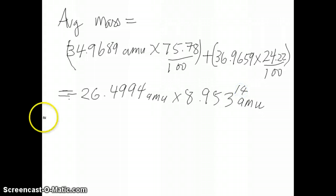I'm just going to add these two numbers right here for sigfig purposes. And then what I do is just add these two numbers together, this one with the 26.4994. And then what I get is a mass that's 35.4525 amu. So that would be the average mass of my chlorine sample in this case.